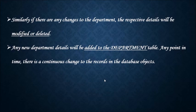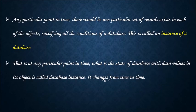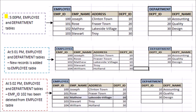There will be either increase or decrease in the number of records or there will be changes in the existing data. At a particular point in time, there would be one particular set of records existing in each of the objects satisfying all the conditions of the database. This is called an instance of database. That is, at any particular point in time, the state of the database with the data values in its objects is called database instance. It changes from time to time. This database has employee and department tables with their own set of data. It shows different values of objects at different times.